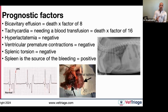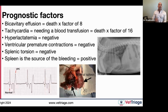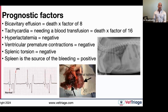Additional negative prognostic factors include bicavitary effusion, tachycardia requiring blood transfusion, hyperlactatemia preoperatively, VPCs, and splenic torsion. Interestingly, the spleen being the source of bleeding is actually a positive prognostic factor — it's treatable by splenectomy, whereas a pancreatic mass hemorrhaging may not be safely accessible or removable.